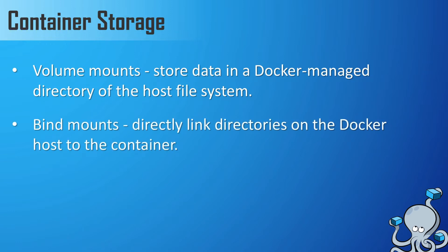Second, we have bind mounts. Bind mounts are directories that you directly link from the host machine to the Docker container. They can exist anywhere on the Docker host's file system. The nice thing about bind mounts is that non-Docker applications and processes can also access and modify that directory, just as any Docker container can modify the bind mounted directory. Bind mounts are less preferred than volumes because you're not guaranteed that the data will persist across containers, since the data location is stored on the host machine. Docker is smart enough to create a bind mount directory on the host file system if it doesn't exist yet, but the catch is that the directory may be moved or deleted during the lifetime of a container, or between the creation of multiple containers that depend on the same mount. So bind mounts are less secure than volumes, because they rely on a very particular file system structure of the Docker host.